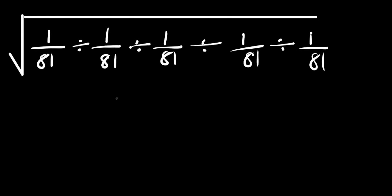Hello, you are welcome. In this video we are going to simplify, without making use of a calculator, the square root of 1 divided by 81, divided by 1 divided by 81, divided by 1 divided by 81, divided by 1 divided by 81, and divided by 1 divided by 81. The approach we are going to use is to consider this identity.